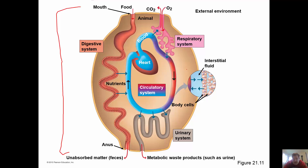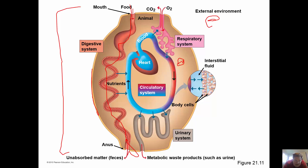All animals have an external environment they cannot control and an internal environment they can control, spending a lot of energy to do so. Food needs to come in, be processed and absorbed, and materials not used are released into the circulatory system. The circulatory system requires a high surface area respiratory system for gas exchange. The blood interacts with nutrients and the gas system, and gets rid of wastes through the urinary system. All of this is surrounded by an epithelial system that protects the inner system and regulates what comes in and goes out.